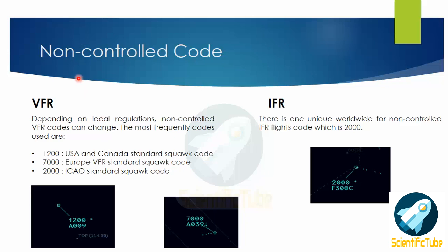Moving on to non-controlled codes. Depending on local regulations, non-controlled VFR codes can change. The most frequently used codes are: 1200 for the US and Canada standard squawk, 7000 for Europe VFR standard squawk, and 2000 is the ICAO standard squawk code. In India, 1200 is used for VFR navigation. Below we have radar scope images of aircraft squawking 1200 and 7000. For IFR, the unique worldwide non-controlled IFR code is 2000.